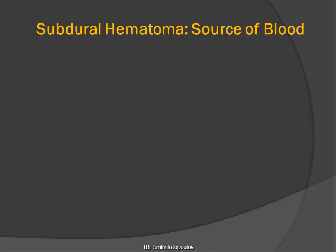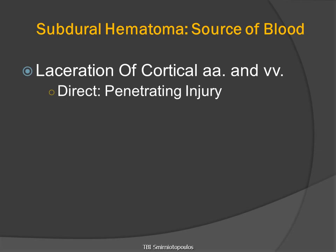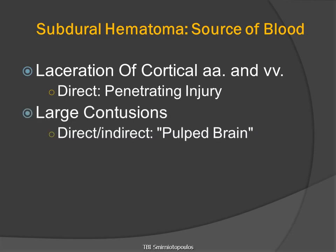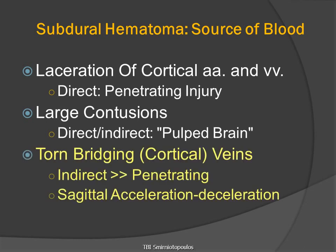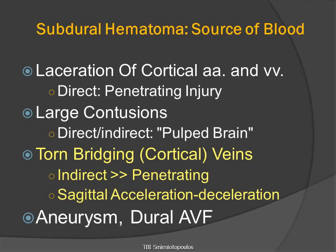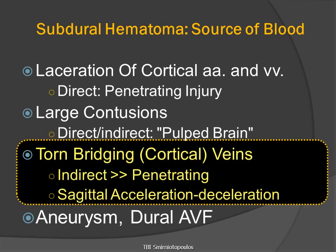What is the source of bleeding into the subdural space? It can be penetrating injury with direct trauma and laceration. It can be liquefaction from large contusion. But very commonly, it is due to inertial forces from acceleration or deceleration tearing the bridging veins. We can also have blood entering the subdural space from ruptured aneurysms and dural arteriovenous fistulas, but the primary consideration is tearing of bridging veins.